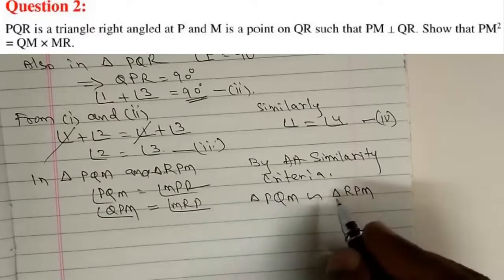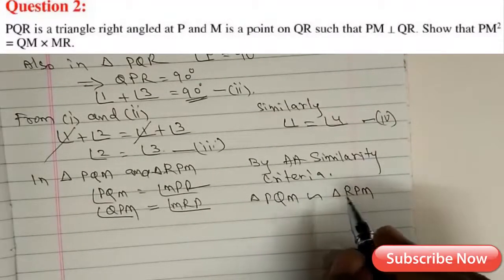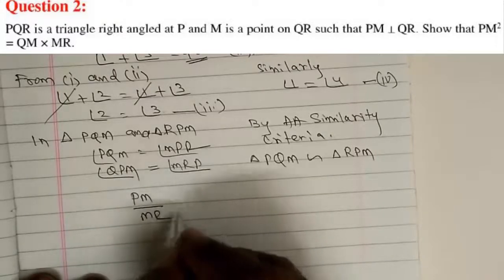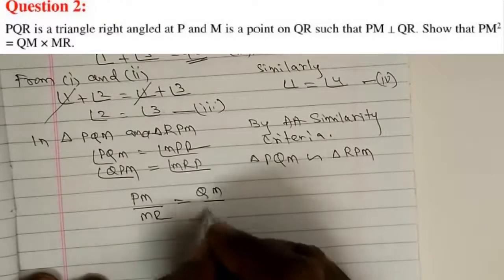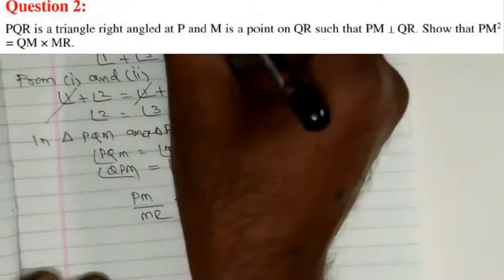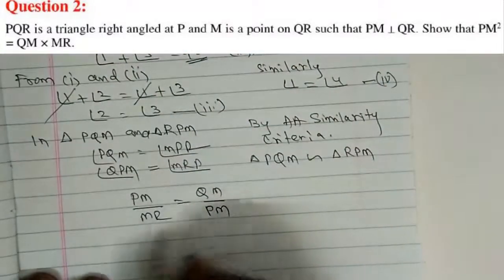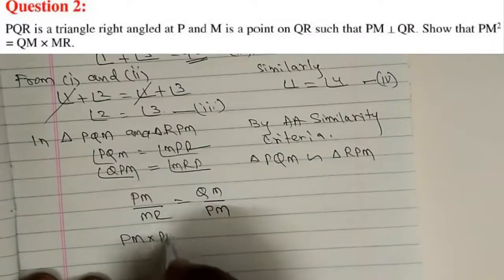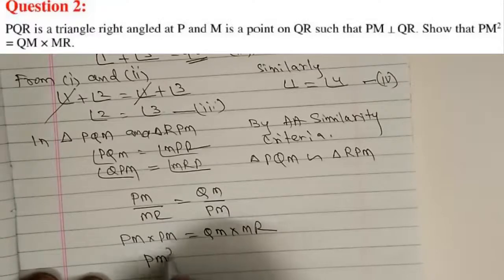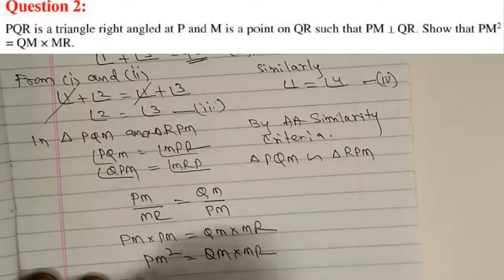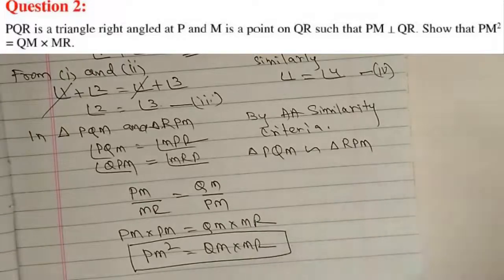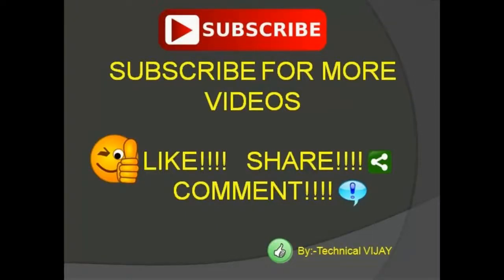Since both triangles are similar, the ratios of corresponding sides are equal: PM divided by MR equals QM divided by PM. Cross multiplying gives PM × PM equals QM × MR, that is PM² equals QM × MR. This is exactly what was asked to prove. Thank you.